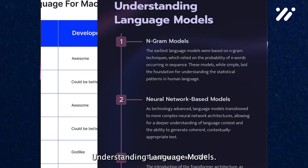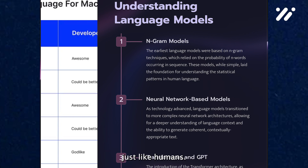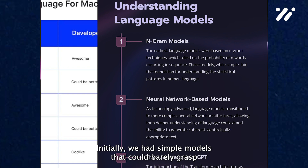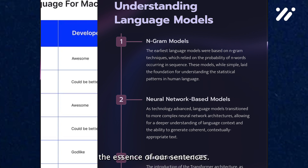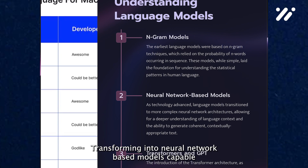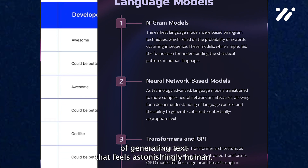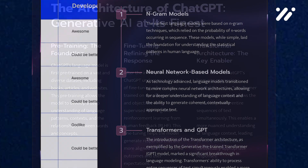Understanding Language Models. Imagine a world where machines can predict the next word in a sentence just like humans — that's the realm of language models. Initially, we had simple models that could barely grasp the essence of our sentences. But as we evolved, so did they, transforming into neural network-based models capable of generating text that feels astonishingly human.